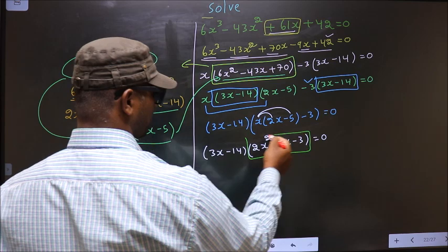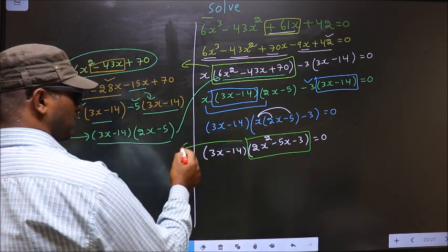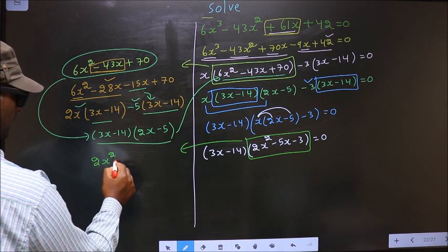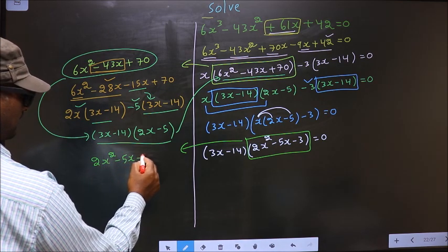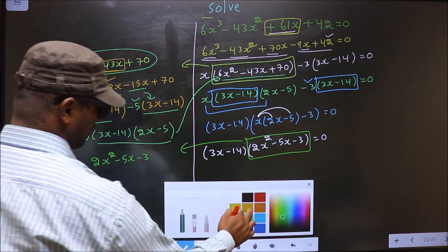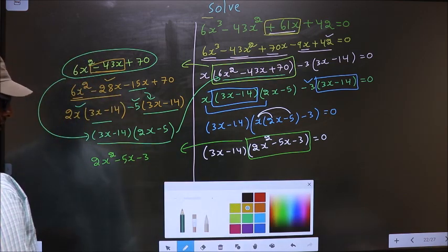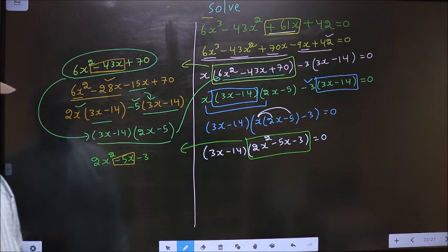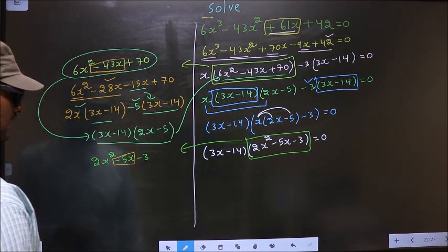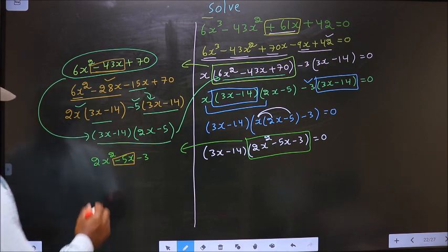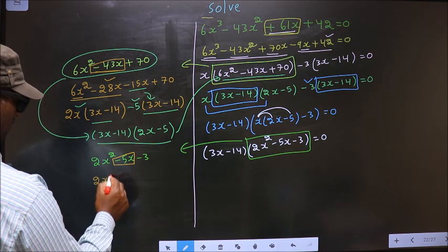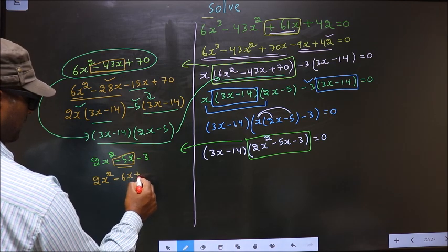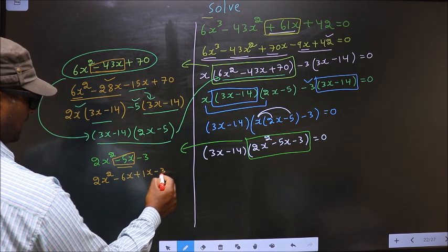Now I got a quadratic. I will factorize this quadratic: 2x² minus 5x minus 3. To factorize this, we should change the middle term, that is minus 5x. 2 into 3 is 6. 6 minus 1 is 5. So now in place of minus 5x, I write minus 6x plus 1x minus 3.